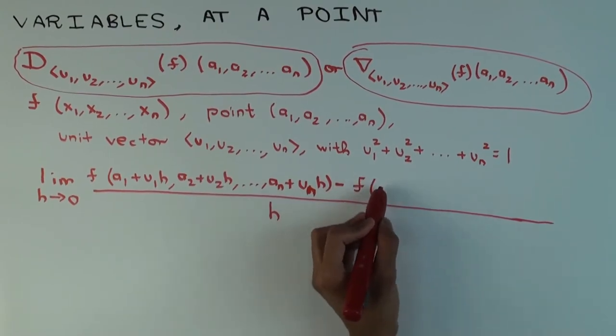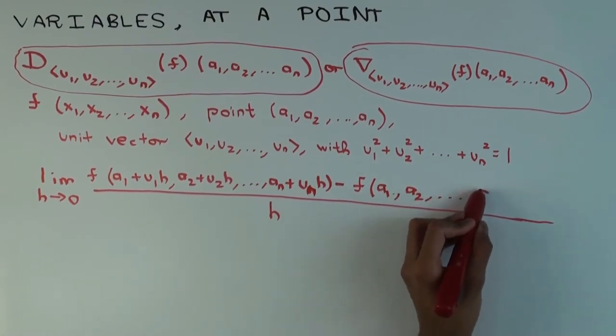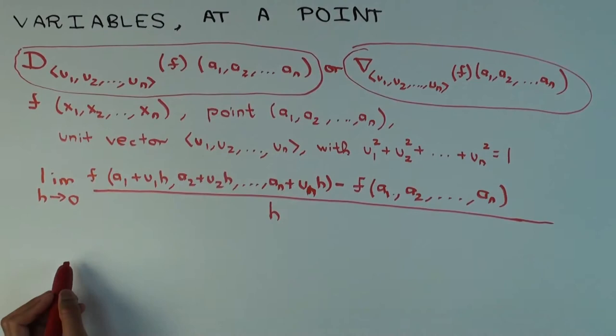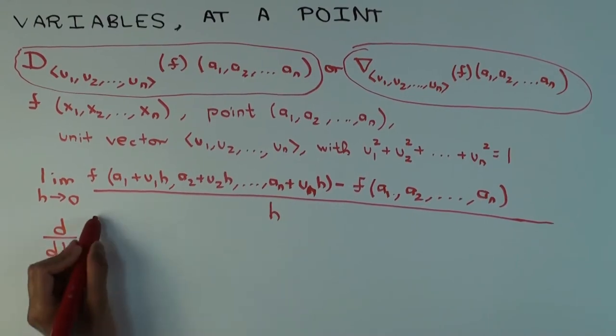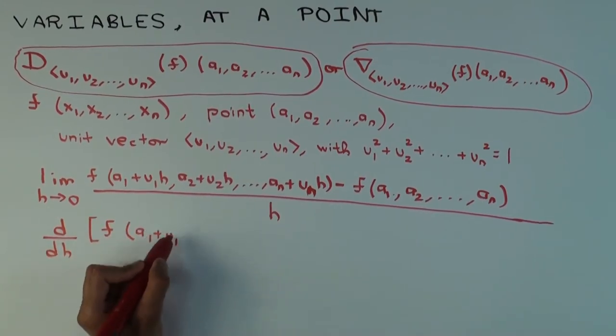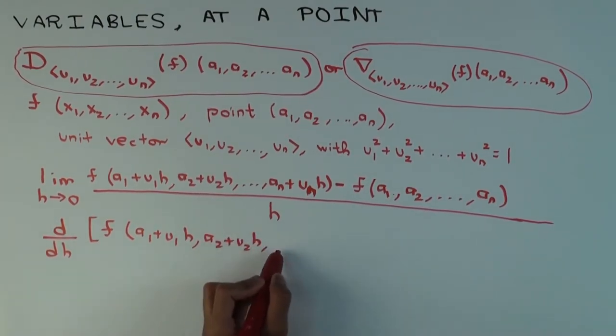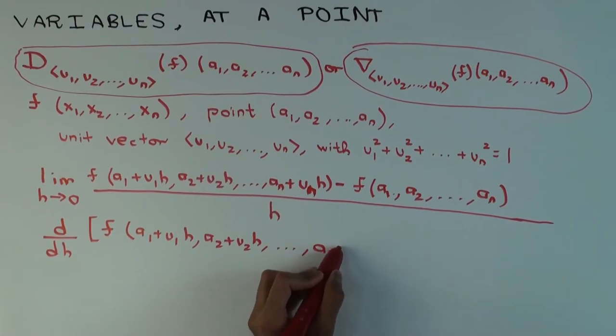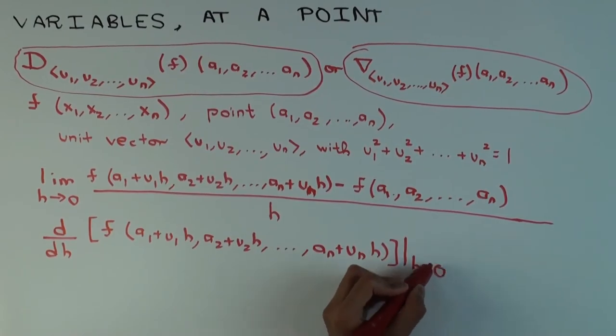Minus f of a. Now what happens if you want to say this in the d/dh notation? You can also write it like this. You can write it as d/dh of f of a₁ plus u₁h,...aₙ plus uₙh, evaluated at h equals 0.